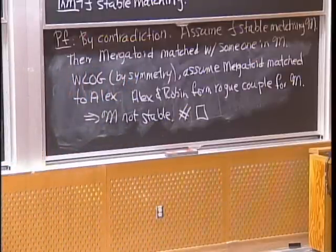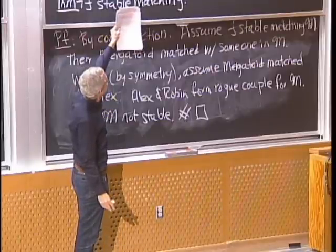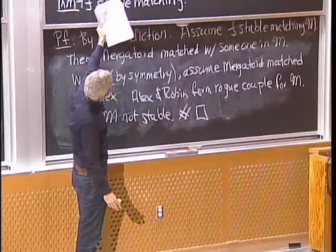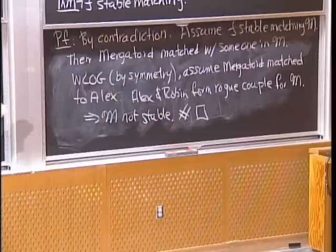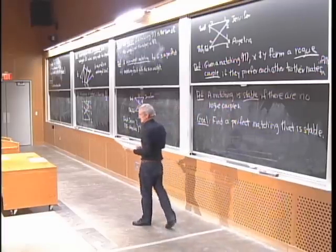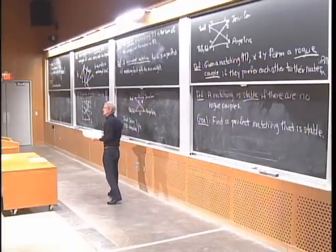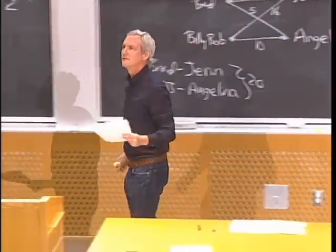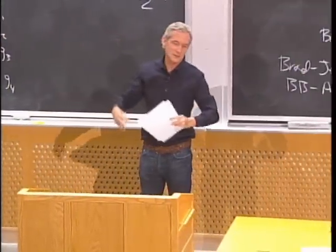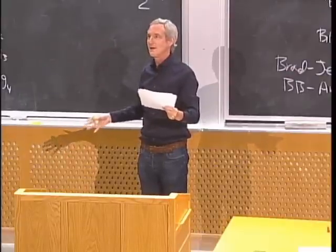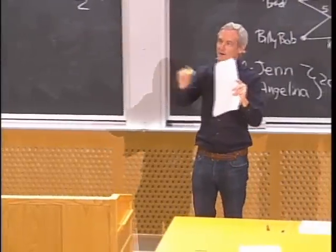The 'without loss of generality' works because the love triangle is symmetric — in terms of graph isomorphism, every node looks the same. You could have had Murgatoid matched to Bobby Joe (then Bobby Joe and Alex would be rogue) or Murgatoid matched to Robin (then Robin and Bobby Joe would be rogue). The argument is the same in all three cases, so by symmetry we only need to do one case.